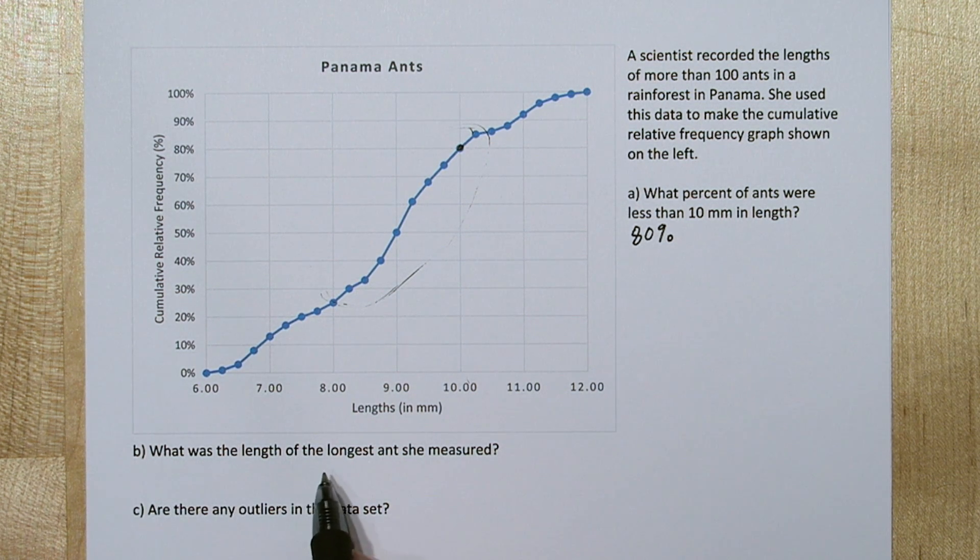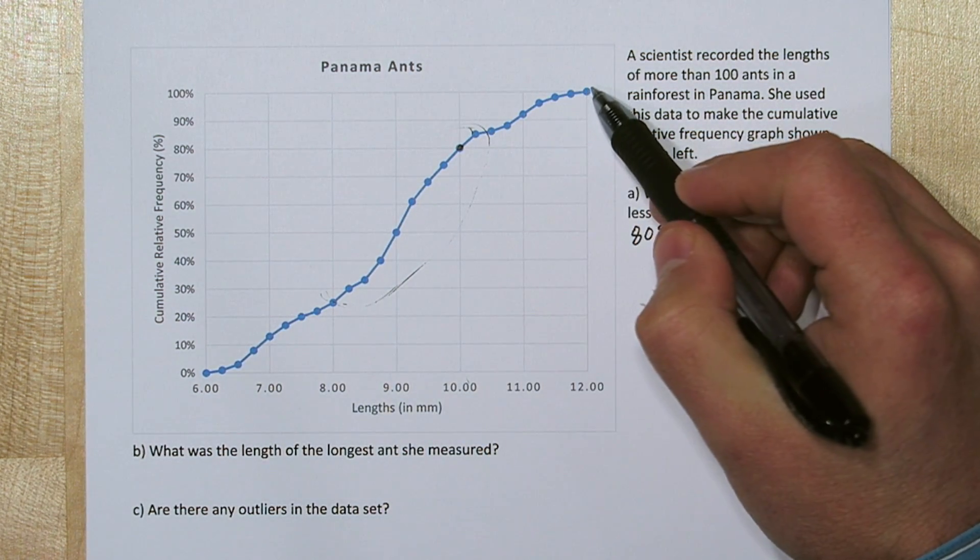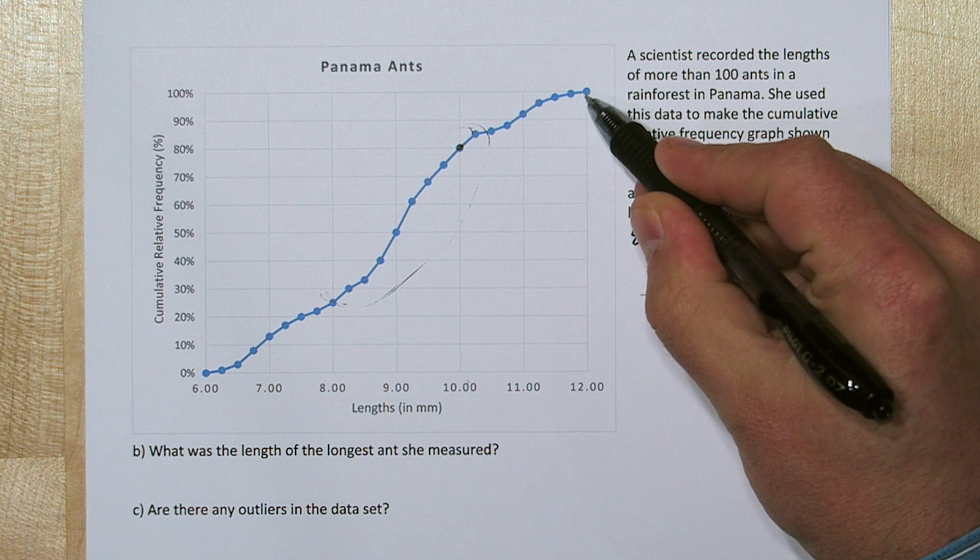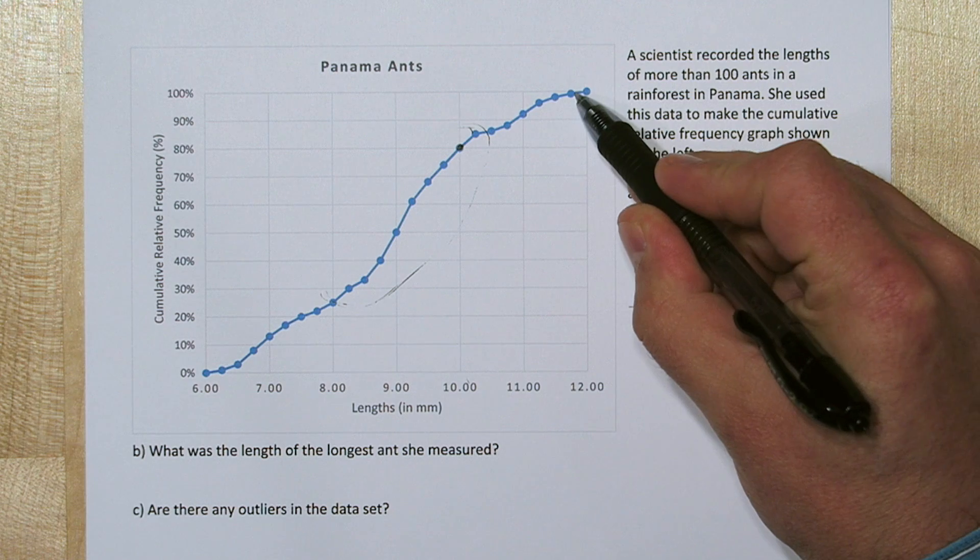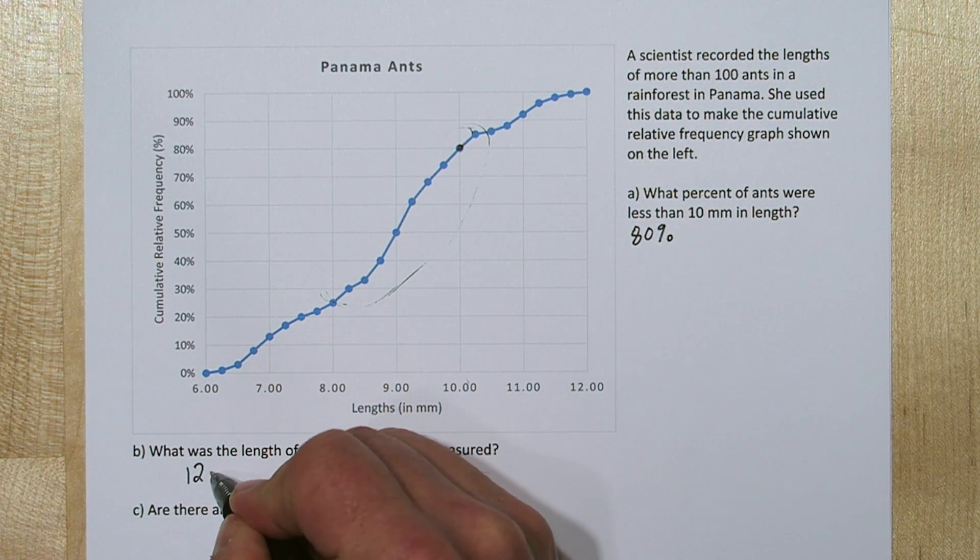So next, we want to know what was the length of the longest ant she measured. If we follow this all the way up until we get to 100%, it looks like 100% of the ants were 12 or less millimeters in length. So the largest ant she measured was at 12 millimeters.